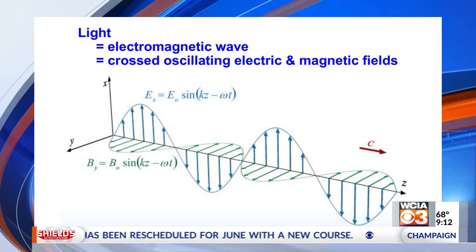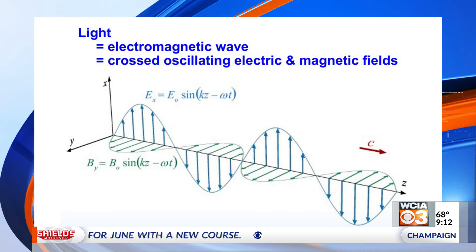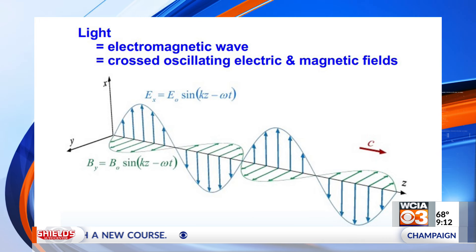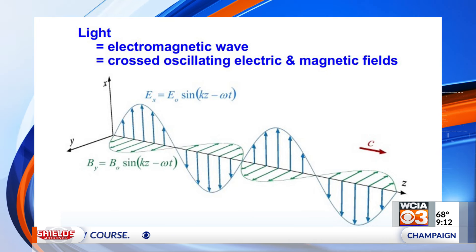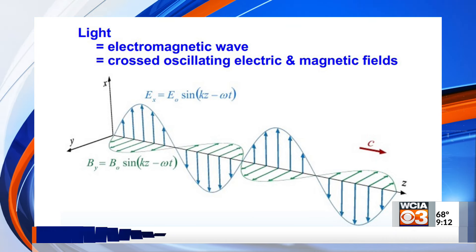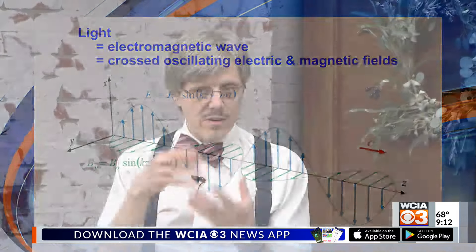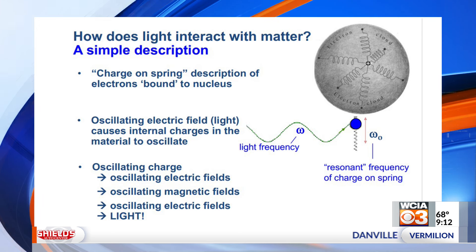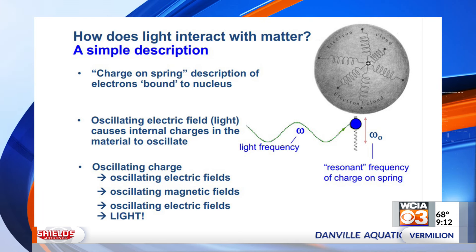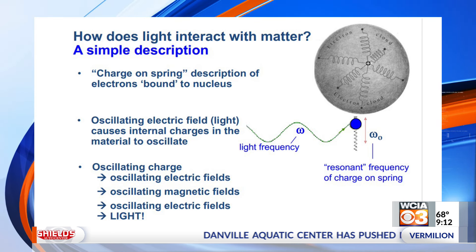The electric fields create magnetic fields that are going left and right, and those magnetic fields create electric fields, and those create more magnetic fields — so we get a wave. We can also think about what's happening in an atom: the electron is sort of stuck to the nucleus, like it's on springs.